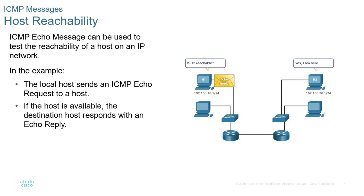ICMP Echo Messages can be used to test reachability of a host on an IP network. The local host sends an ICMP Echo request to a host; if the host is available, the destination host responds with an echo reply. H1 sends a ping through the network, H2 receives it and responds with an echo reply back to H1. This can be blocked by a firewall, whether that's Windows Defender or a network firewall.